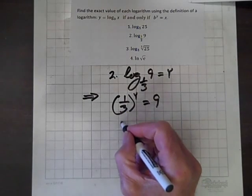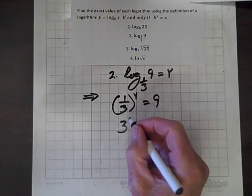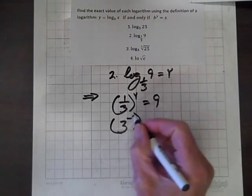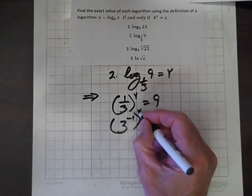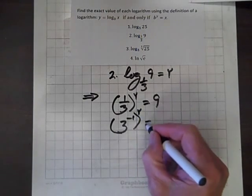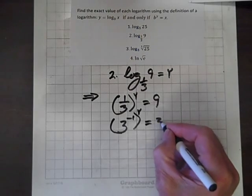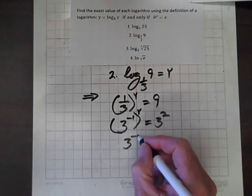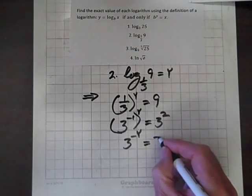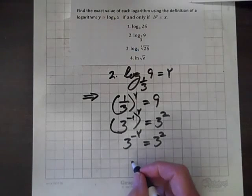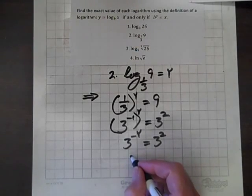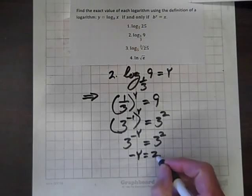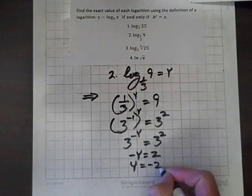We can rewrite 1/3 as 3 to the negative 1. Since it's moved into the numerator position, all of that raised to the y power equals 9, which is 3 squared. The only way that is possible is if negative 1 times y, or negative y, equals 2 — giving us y equals negative 2.